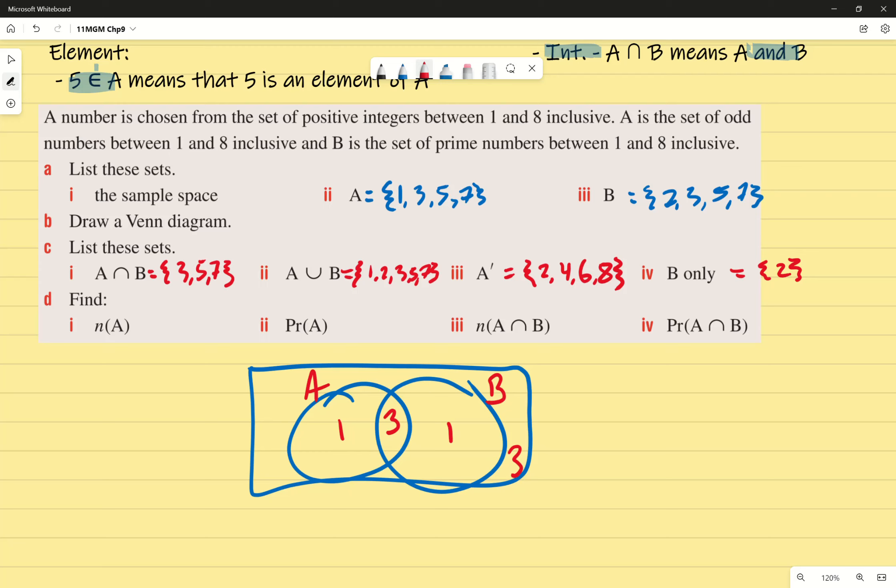n(A). What does n mean again? The cardinal number, the number of. So the number of numbers in this circumstance for A is just going to be four, because there are four numbers here. The probability of A would be four over eight. And we're getting that because there are four numbers in A, out of a total of eight, which gives me a half.